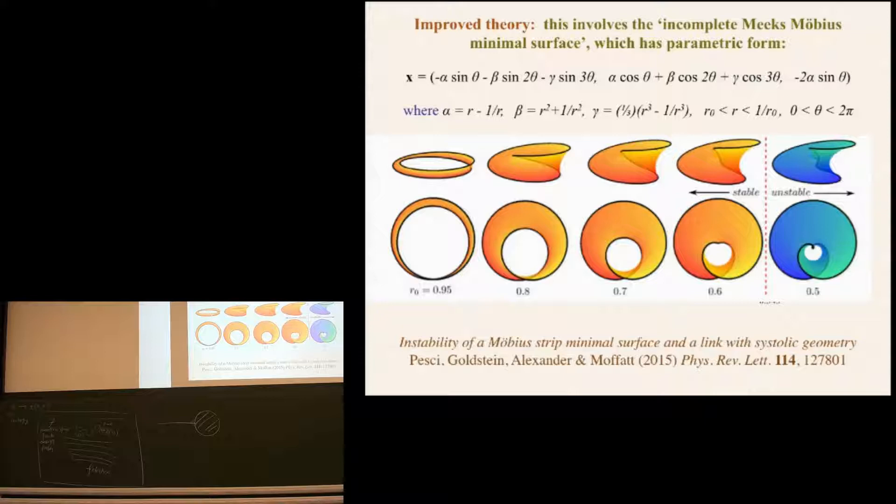And as you vary the r0, r varies between an r0 and 1 over r0. As r0 is varied, you run through a family of surfaces. And you start here, r0 is small. As r0 decreases, this surface, the hole decreases. And it looks pretty well like our Möbius minimal surface at this sort of stage. If you go too far, there's another little dip appears. And that's the result of the cos 3θ sin 3θ terms that appear here. But we can't remove them. That is the Meeks minimal surface. However, we can take that surface and analyze its stability.